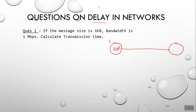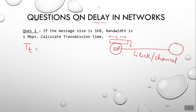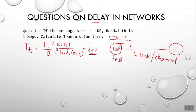The system generates a packet of some size — suppose the size is L. The time taken to put this packet onto the link or channel is called the transmission time. Transmission time equals L divided by B, where L is in bits and B is the bandwidth in bits per second, giving the result in seconds.